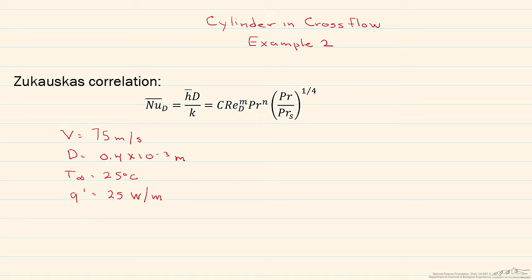So again, we're going to have a thin wire, and we're going to use the exact same variables. Heat is dissipated from it to air flowing by with convection, and the velocity of the air is 75 meters per second.